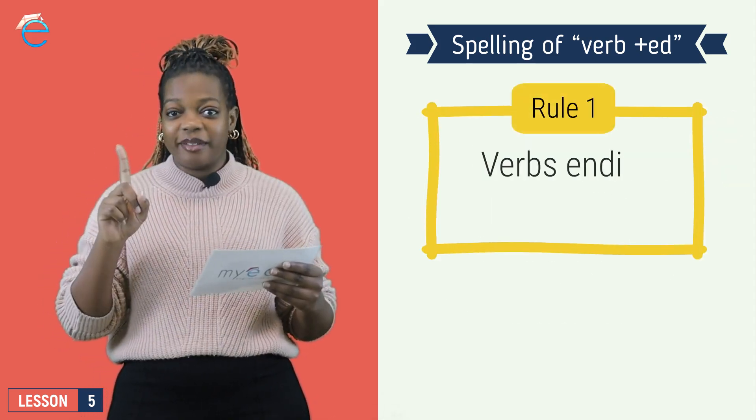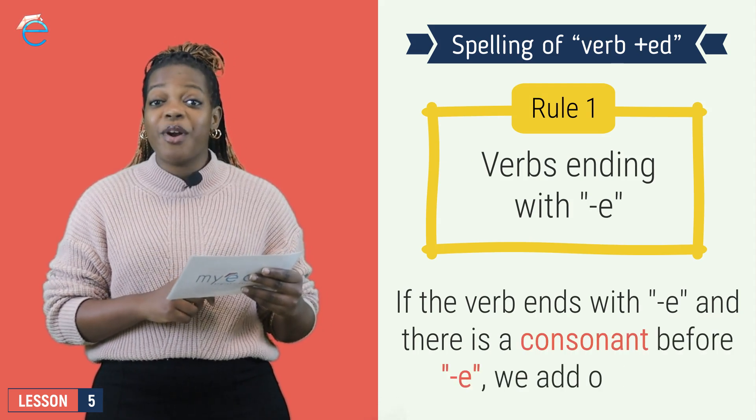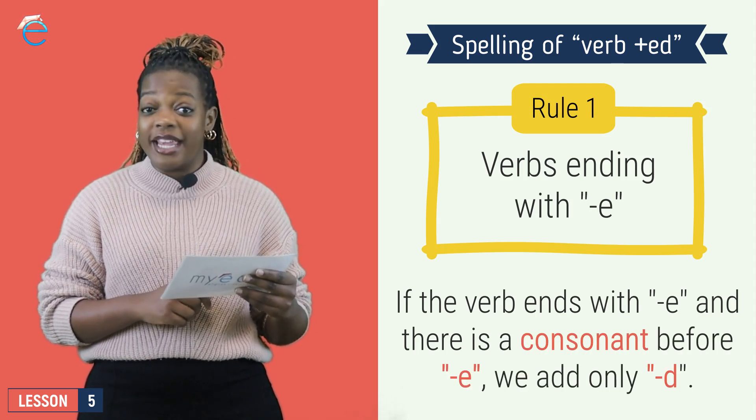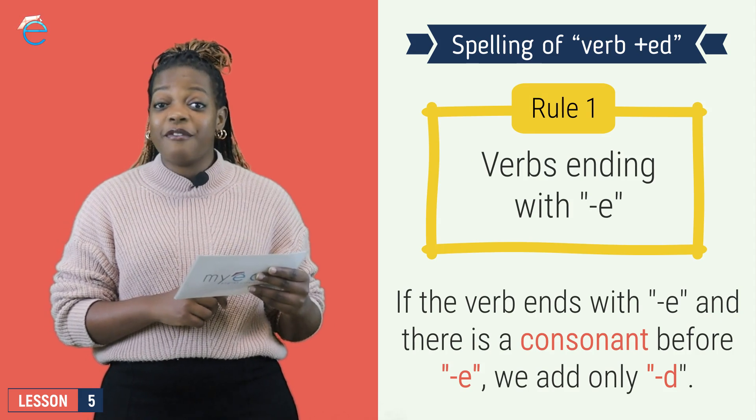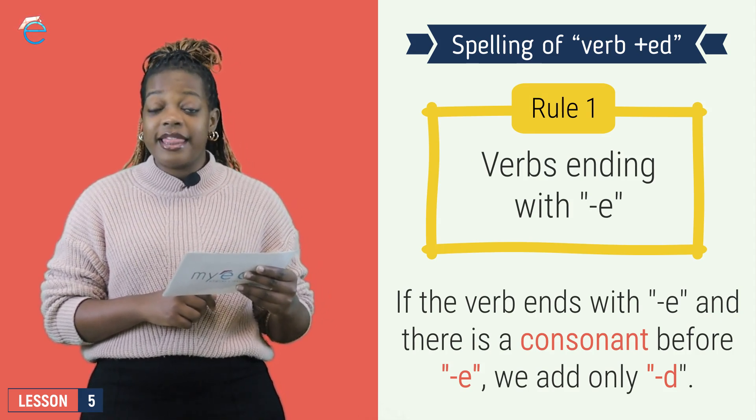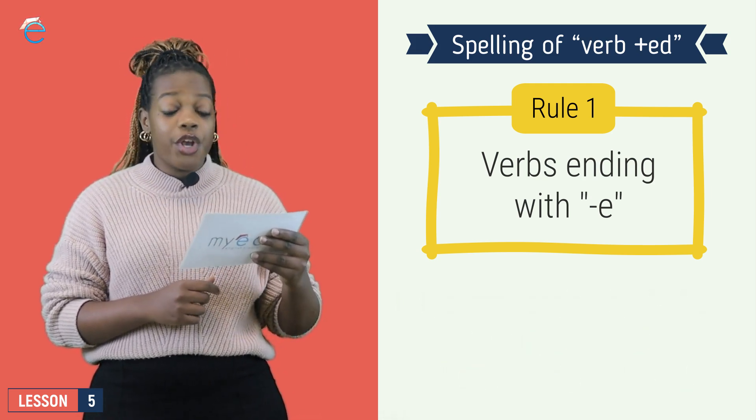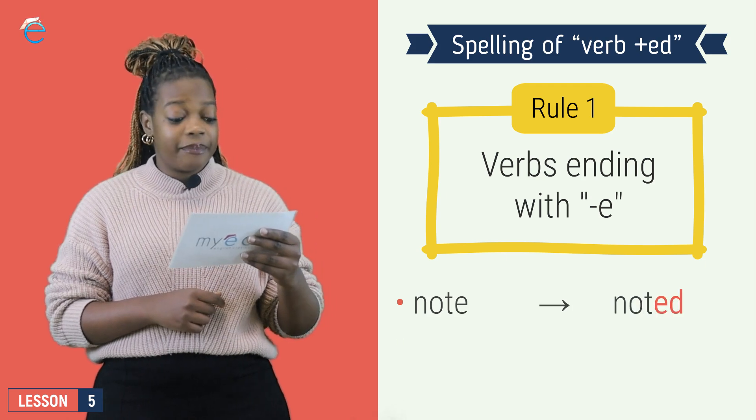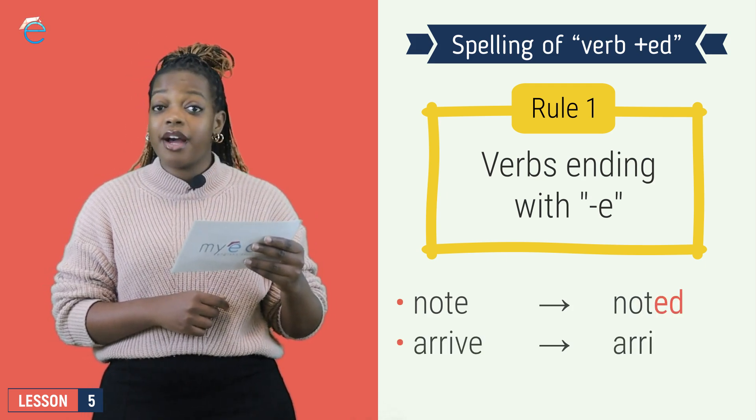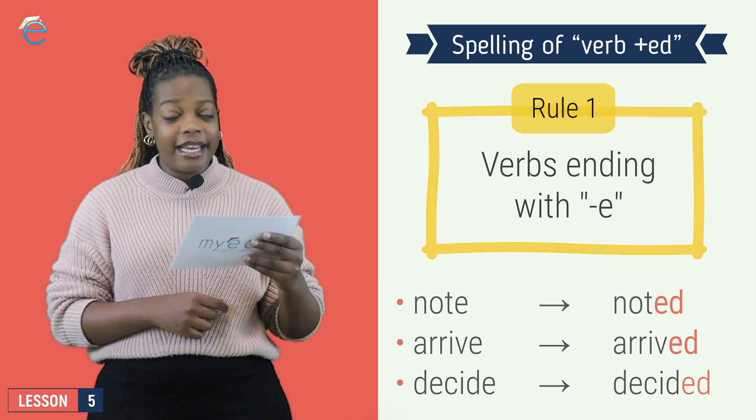Rule number one. If I have a word and my word finishes with the letter E, and before my E I have a consonant, then all I do is add D. Note, noted. Arrive, arrived. Decide, decided.